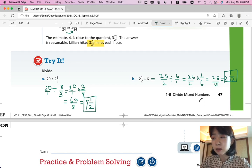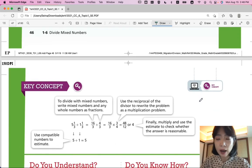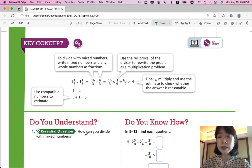If you got all of them correct great job. Let's summarize our lesson. To divide with mixed numbers you write mixed numbers and any whole numbers as fractions and change it into multiplication by using the reciprocal and multiply them and simplify them. You can use compatible numbers to estimate and see where your answer is reasonable. That was lesson 1-6 divide mixed numbers. Thanks for watching. If you have any more questions please ask Miss King in class. We'll continue with the next lesson in the next video. Bye bye.